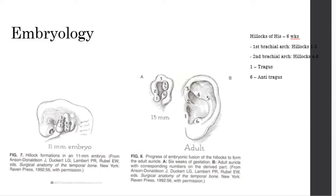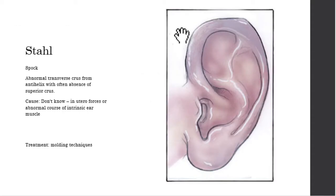Let's look at some odd-looking ears. Most of this you'll see in Peds Clinic. If a kid comes in with a pointy ear, we call it a Stahl ear, also known as a Spock ear. We believe this is from an abnormal transverse crus — the superior crus is not well-formed. The causes are unknown, possibly in utero forces or abnormal intrinsic ear muscles. Treatment is molding in the first few weeks of life, or later surgical treatment.